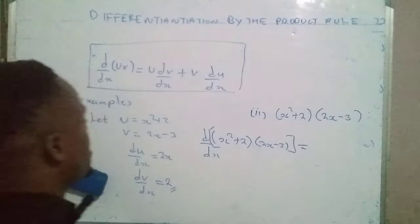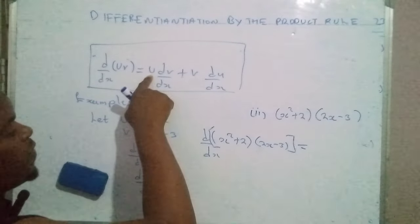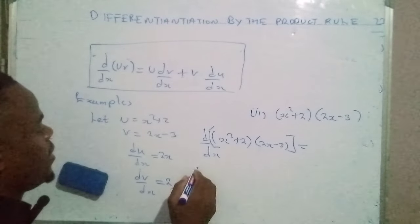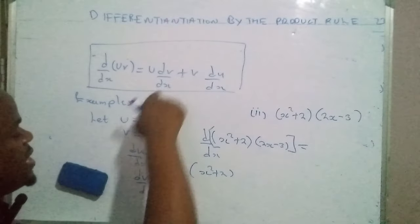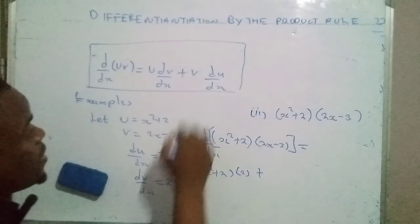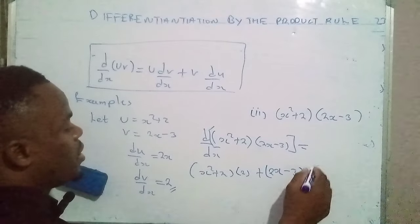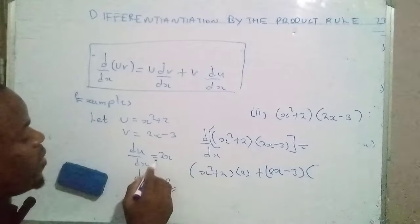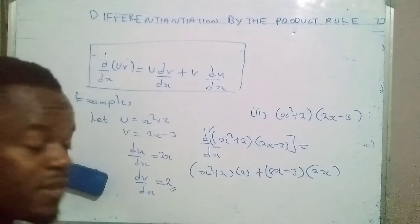That will be equal to: the function u, which is x squared plus two, multiplied by dv/dx which is two, plus v — which is 2x minus three — multiplied by the derivative of u, which is du/dx equal to 2x.